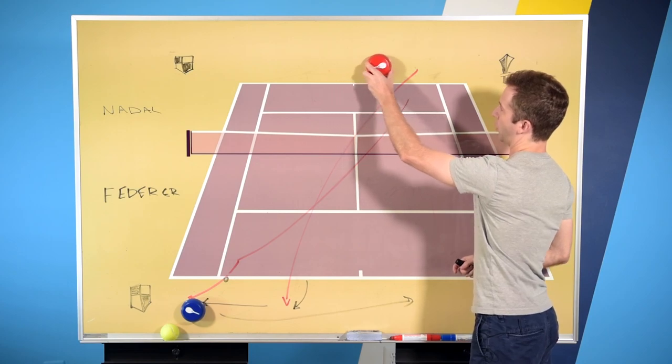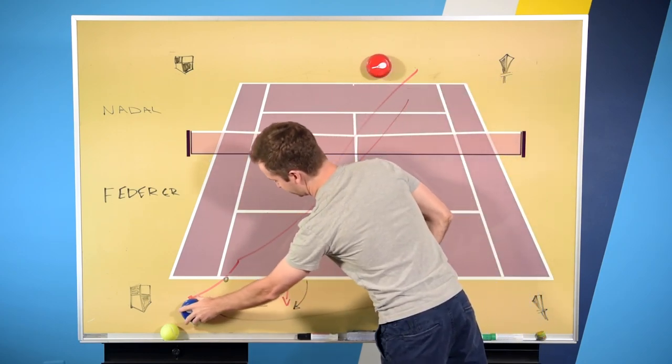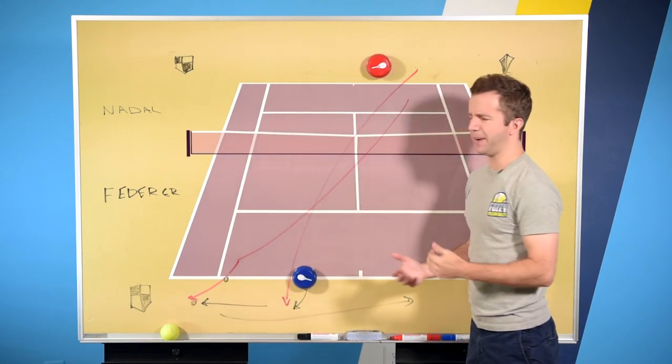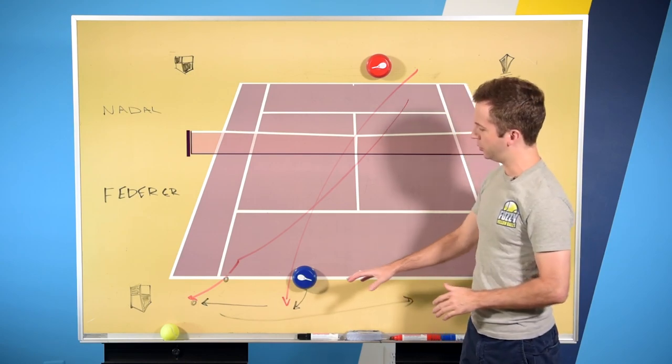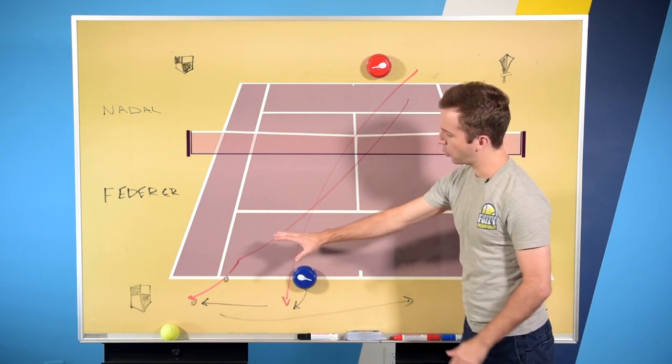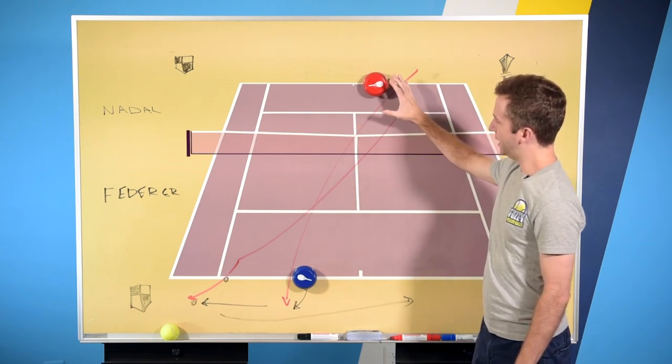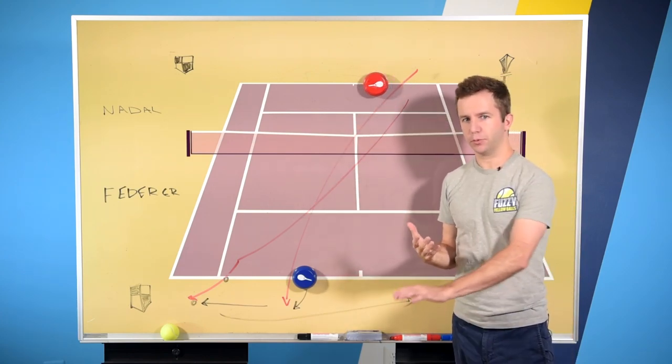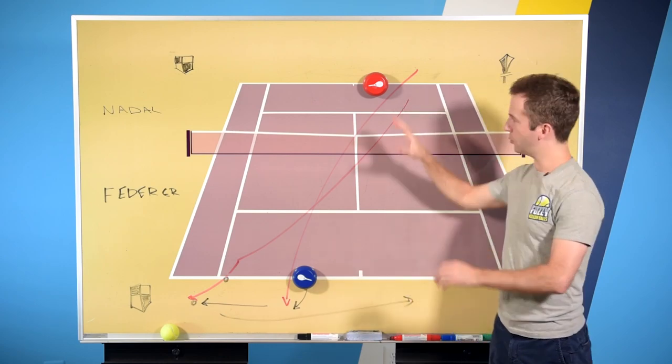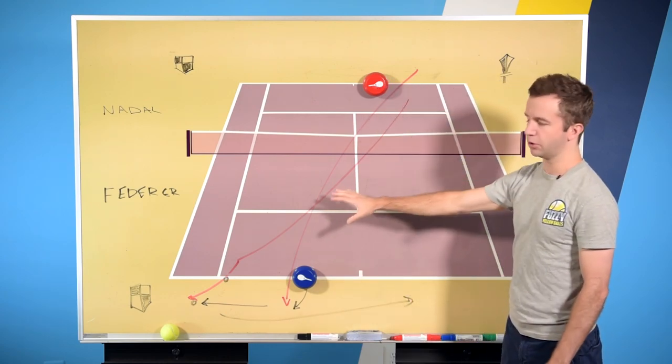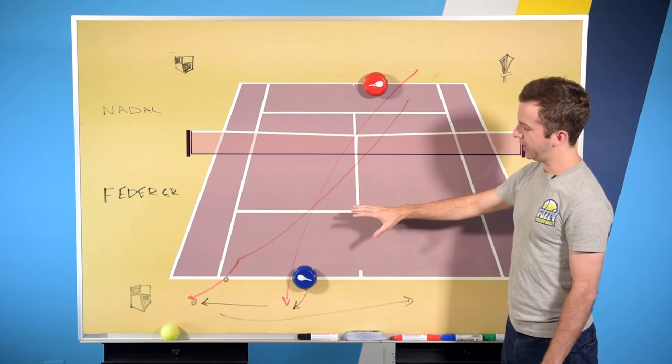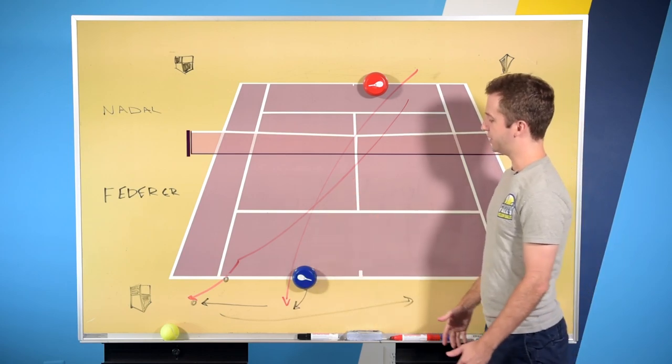So the thing to look for that Fed has been doing to defend this, and let's take a step back earlier in Fed's career. What he would do is he would try and slice either one of these backhands. And the problem with that is Rafa could step in and Rafa doesn't have any trouble with those low slices. He's got so much topspin on his forehand, he can still run this play.